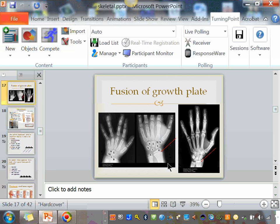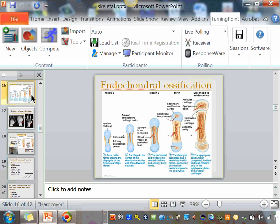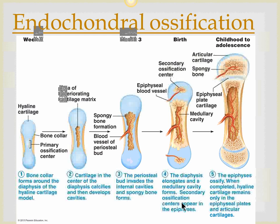So last time we left off, we had looked at endochondral ossification, which occurred in almost all bones of the body. And membranous or intramembranous ossification occurred in the cranial bones, especially the ones on the top of your skull and the clavicle.